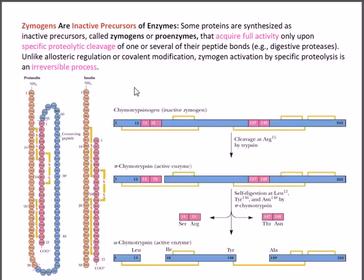As we know, enzymes are secreted largely via some secretory organs, like the pancreas for example. The pancreas secretes many important enzymes like chymotrypsin. Now those enzymes are not exactly secreted in their active form — they are secreted as a precursor of that enzyme, and then the precursor is converted into the active enzymatic form.